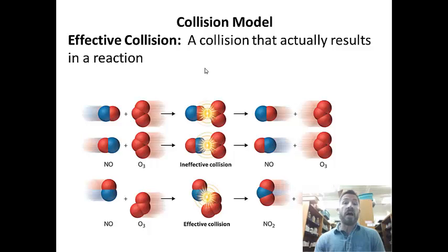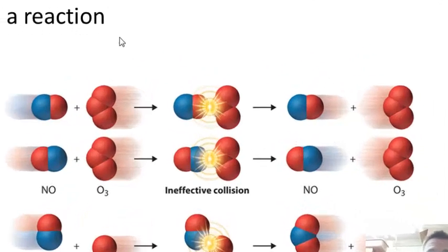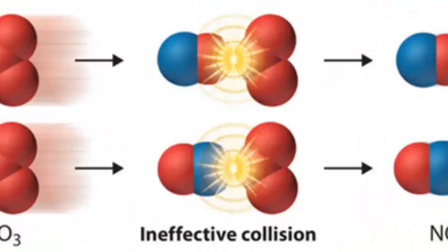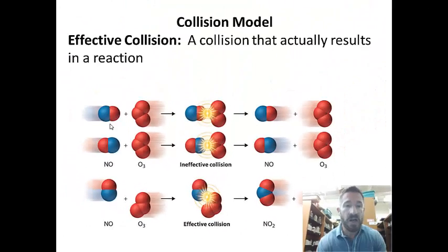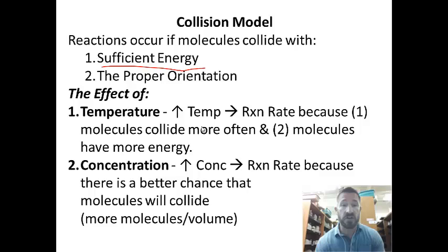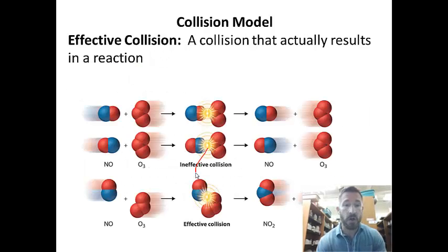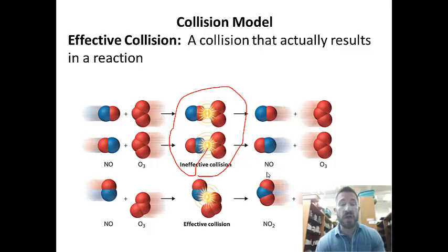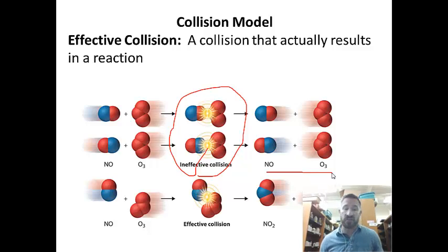An effective collision, what is an effective collision? An effective collision is a collision that actually results in a reaction. So I have two drawings here, one of an ineffective collision, one of an effective collision. So we see here, the ineffective collision, it's still the nitrogen monoxide, and this is with ozone this time. And the ineffective collision we have here, these did not result in a reaction. So at the end, you have the same products that you started with. There is no reaction. That is an ineffective collision.